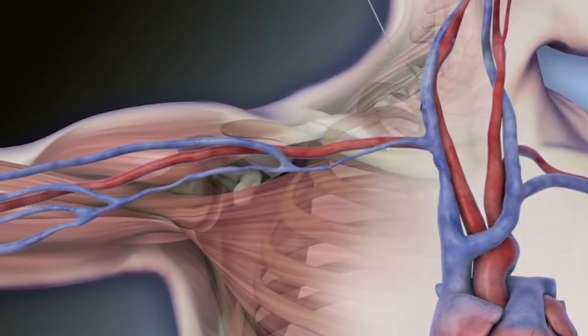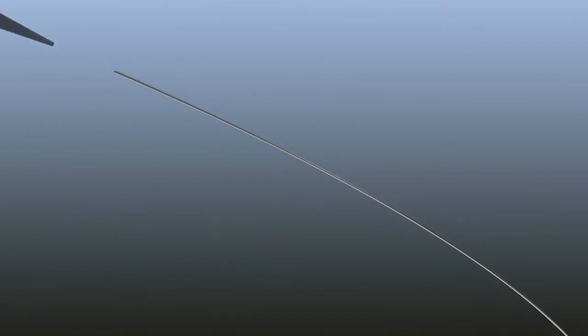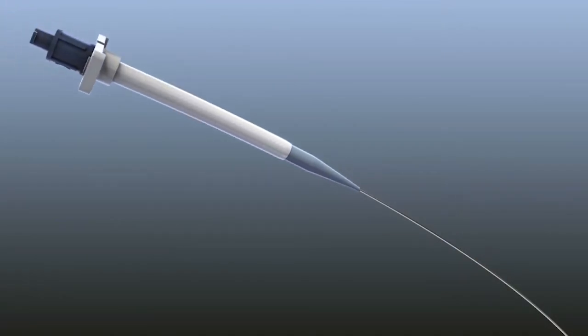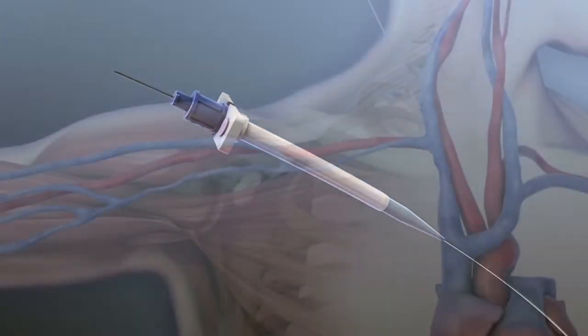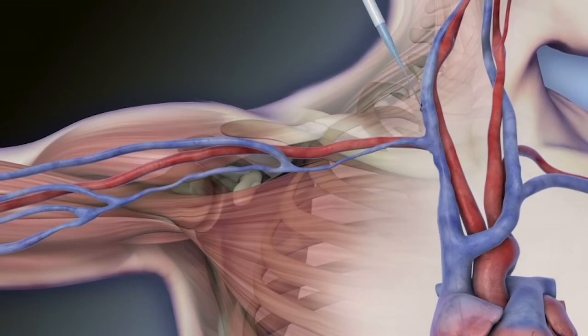Using fluoroscopic guidance, advance the guide wire to the inferior vena cava. Insert the dilator over the guide wire. Tabs should extend well outside the body. Remove the dilator and plug the sheath with the hemostasis plug.